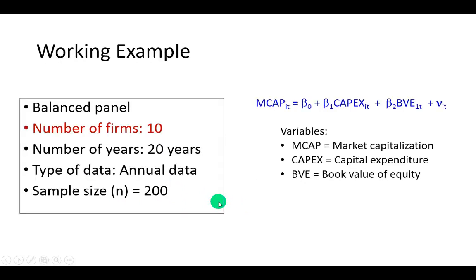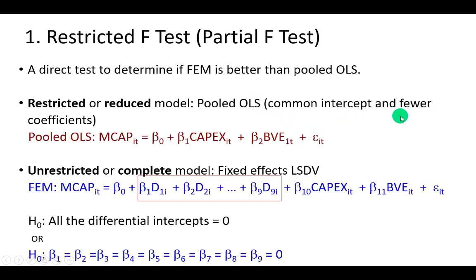So to do this, we're going to be utilizing the same data set consisting of 10 firms with 20 years of data yielding 200 observations. And in this, we're going to be regressing market capitalization against capital expenditure and book value of equity.